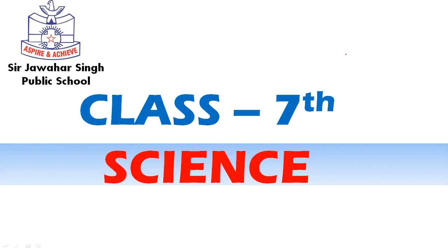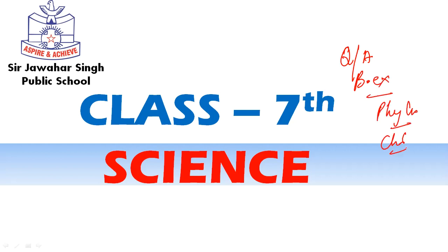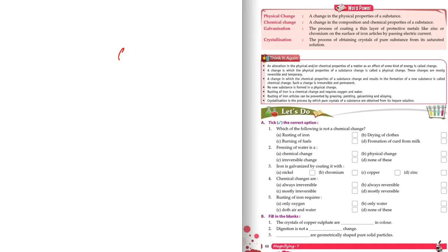Hello dear 7th class students. Today we will do question answers and book exercise of chapter Physical and Chemical Changes, that is chapter number 6 in your book. Open page number 68. First we will do MCQs — multiple choice questions, that is tick the correct option. The first question is: which of the following is not a chemical change?